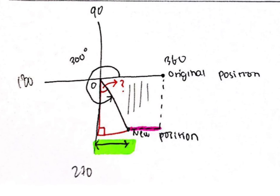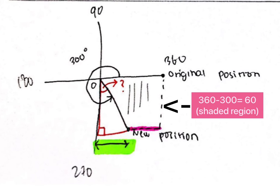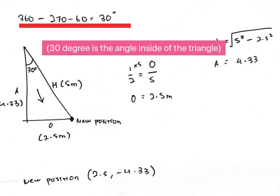The total for the shaded region outside of the triangle is 60. The 60 degree is because the angle from the original position to the new position is 300 degrees. Minus it with 360 degree, so you will get the shaded region. After you minus, the answer will be 30 degree.